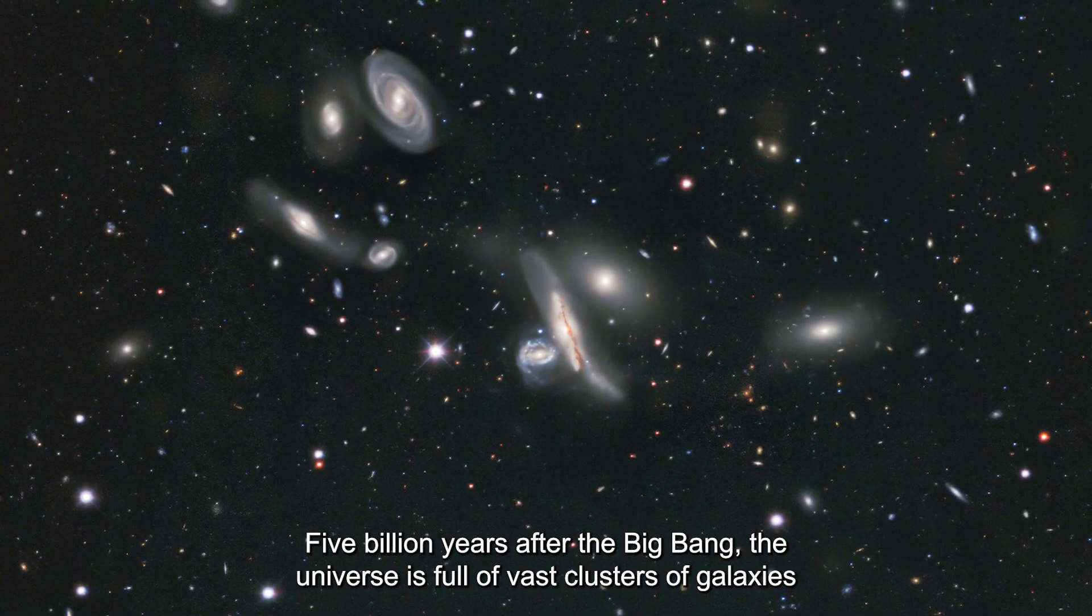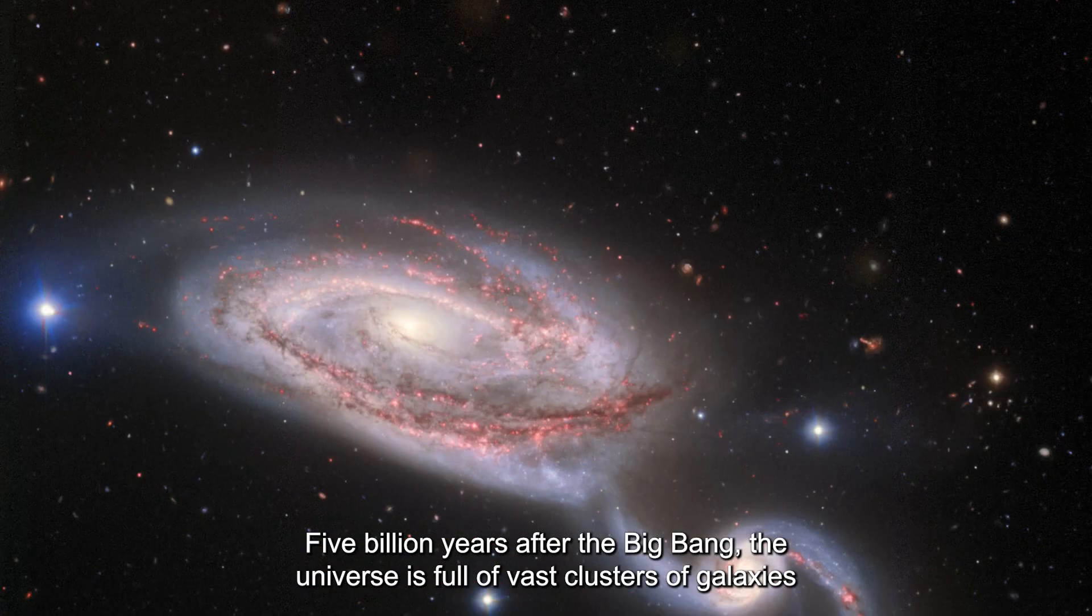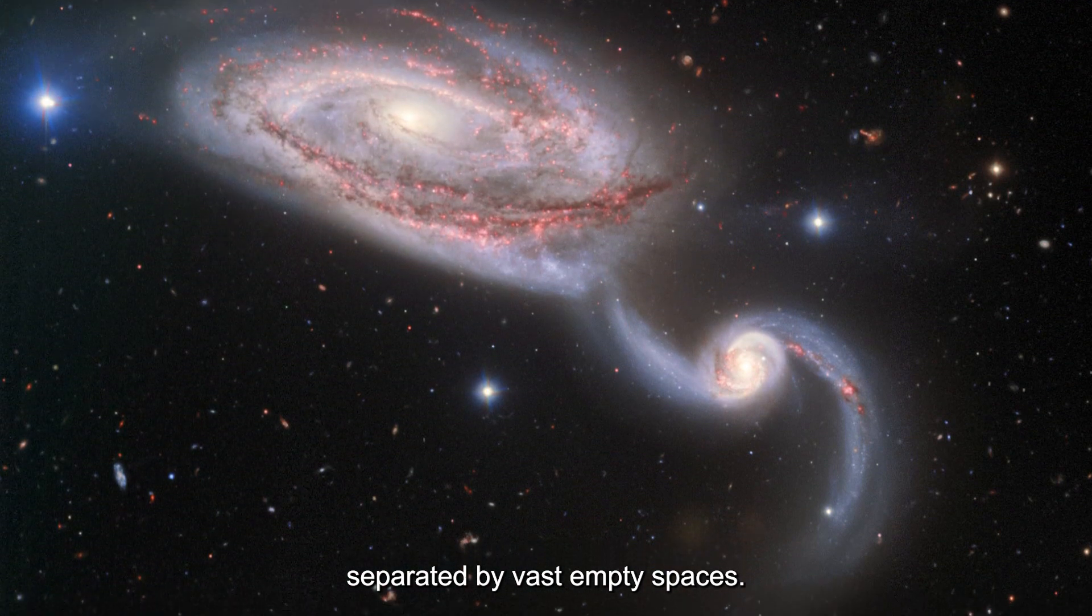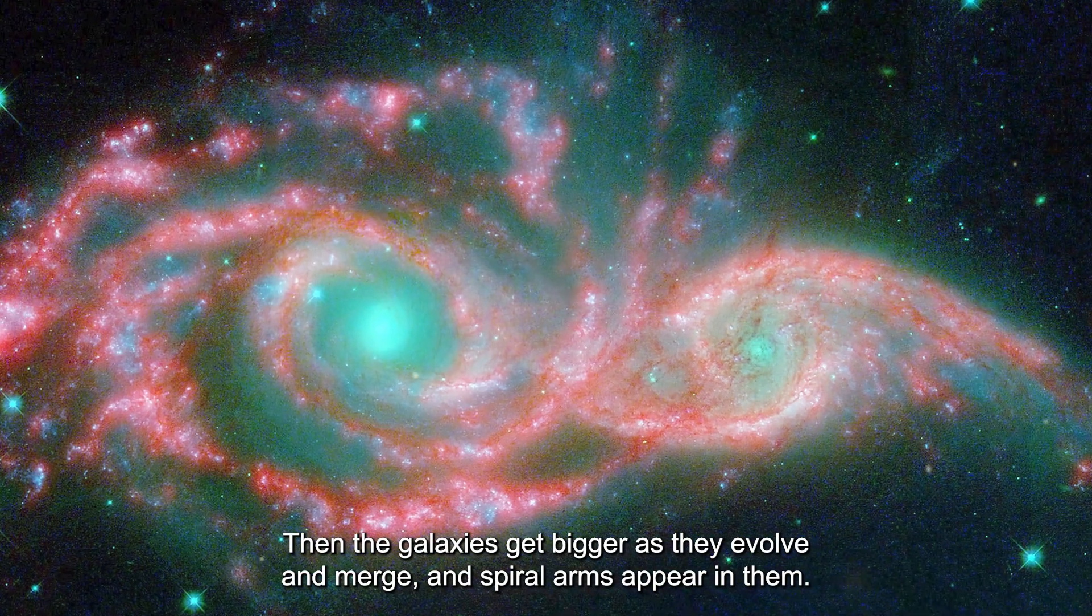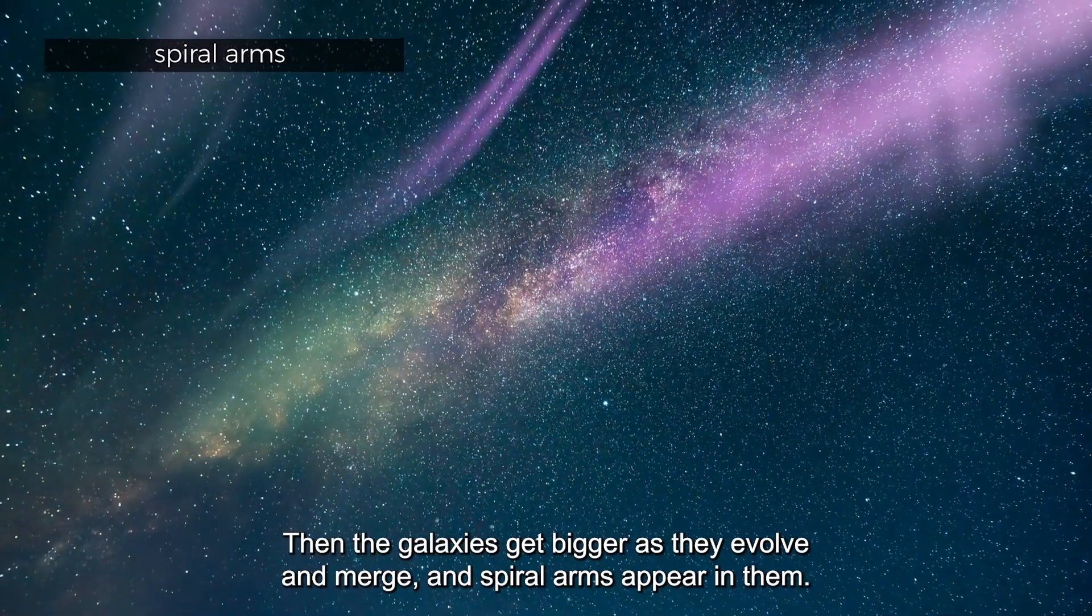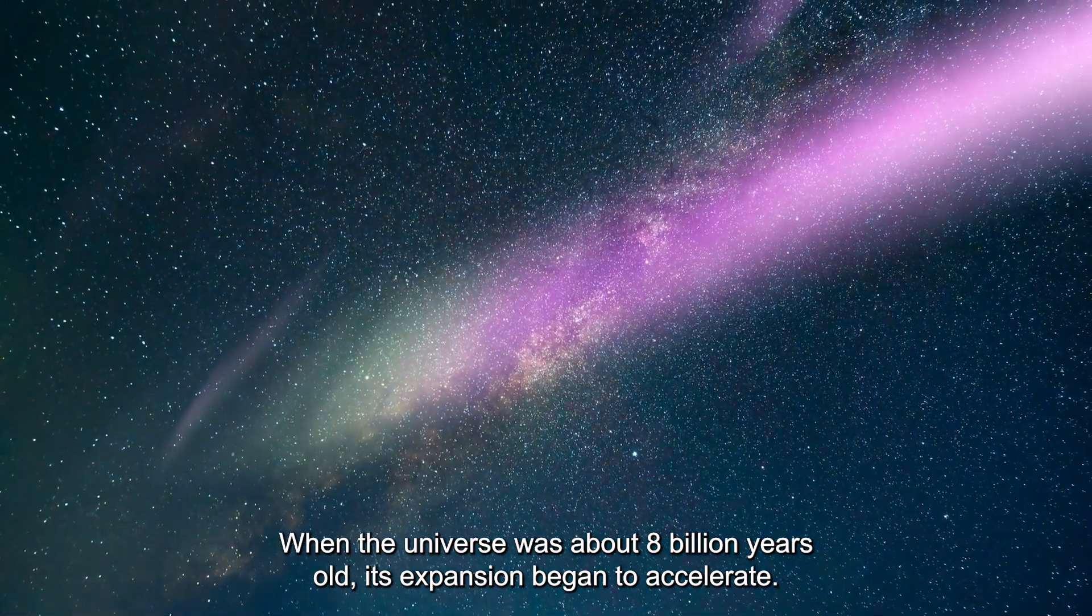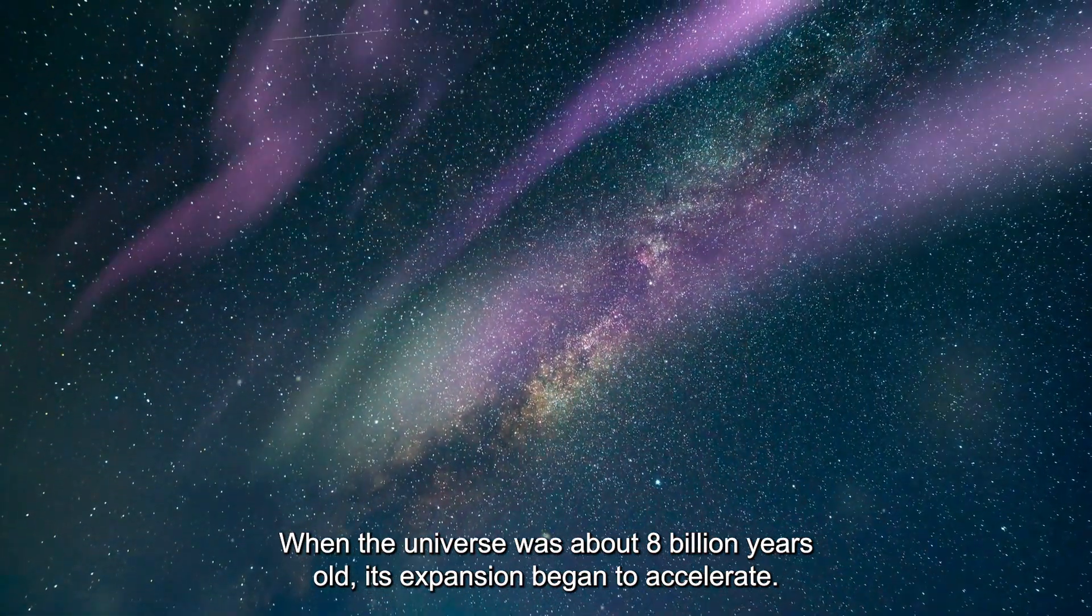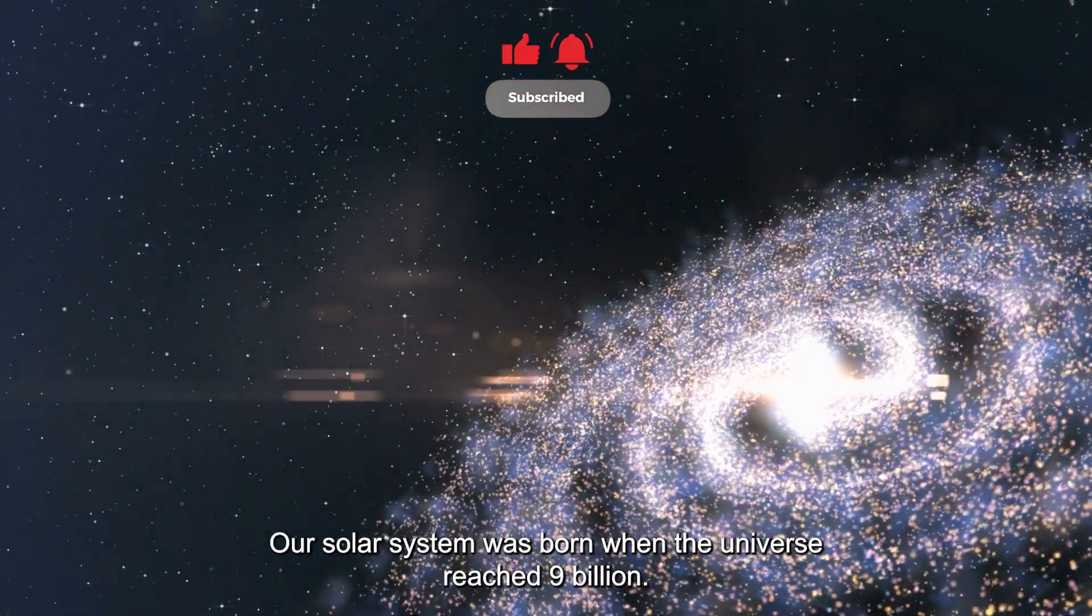Five billion years after the Big Bang, the universe is full of vast clusters of galaxies separated by vast empty spaces. Then the galaxies get bigger as they evolve and merge, and spiral arms appear in them. When the universe was about 8 billion years old, its expansion began to accelerate. Our solar system was born when the universe reached 9 billion.